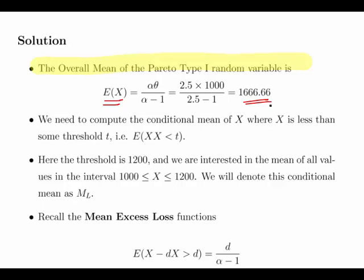What we have to do here is compute the conditional mean of X where X is less than some threshold t, that is E(X|X < t). Here the threshold is 1200, so the expected value of X given that X is less than 1200.